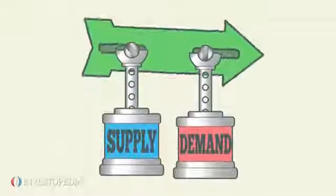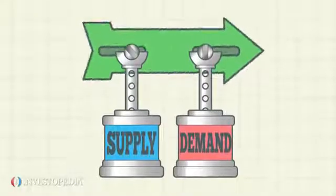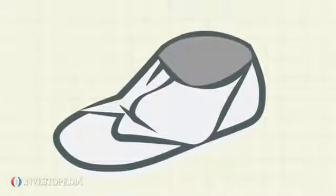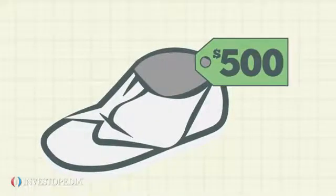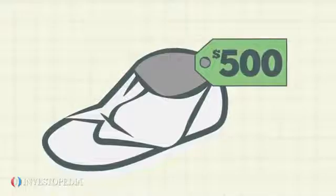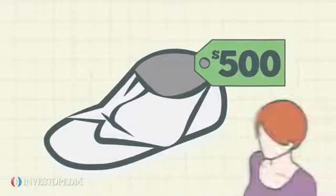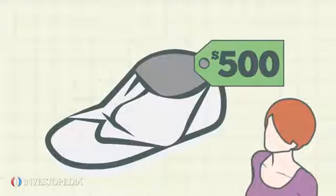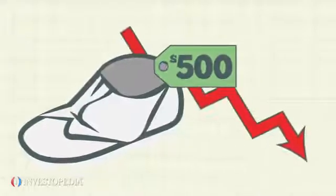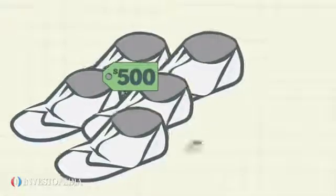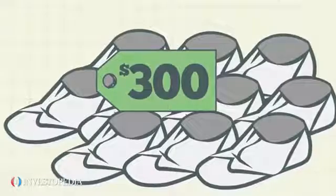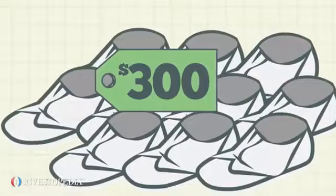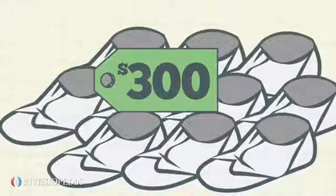Supply and demand rise and fall until they achieve balance. Let's say a shoe company develops a desirable new athletic shoe and sets the retail price at $500. While demand for the new shoe might be initially high, most consumers are not willing to spend that much for athletic shoes, so sales will quickly drop after the initial rush. With declining sales but plenty of shoes to sell, the manufacturer will reduce the price until the demand rises again. When the demand for an item balances with the supply of that product, the market is said to be at equilibrium.